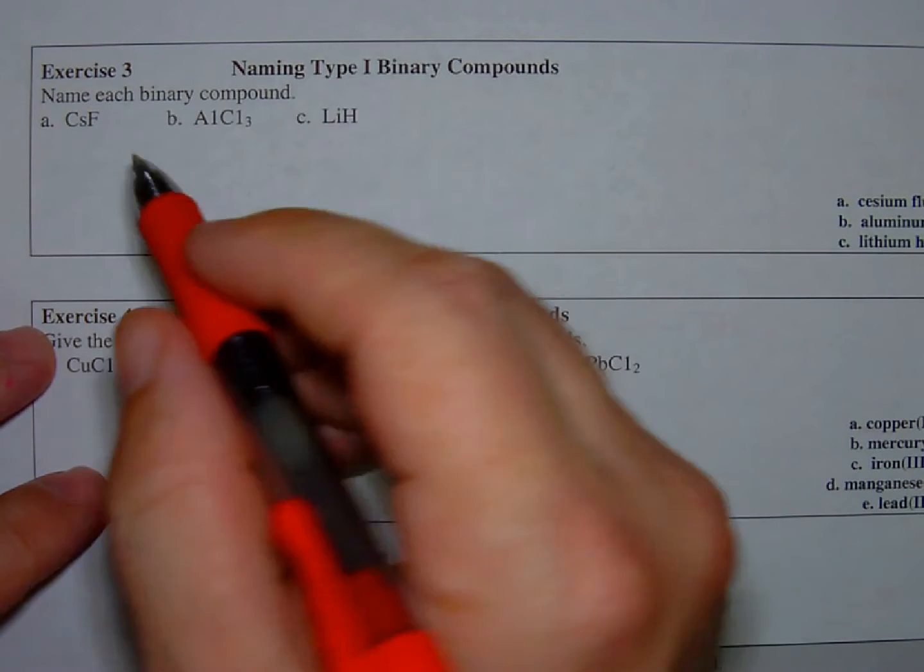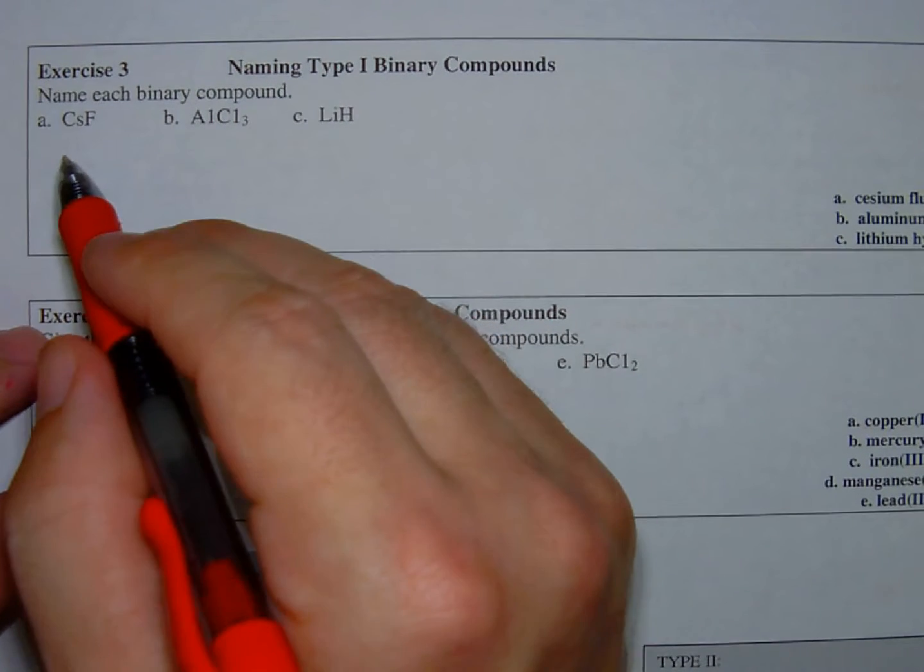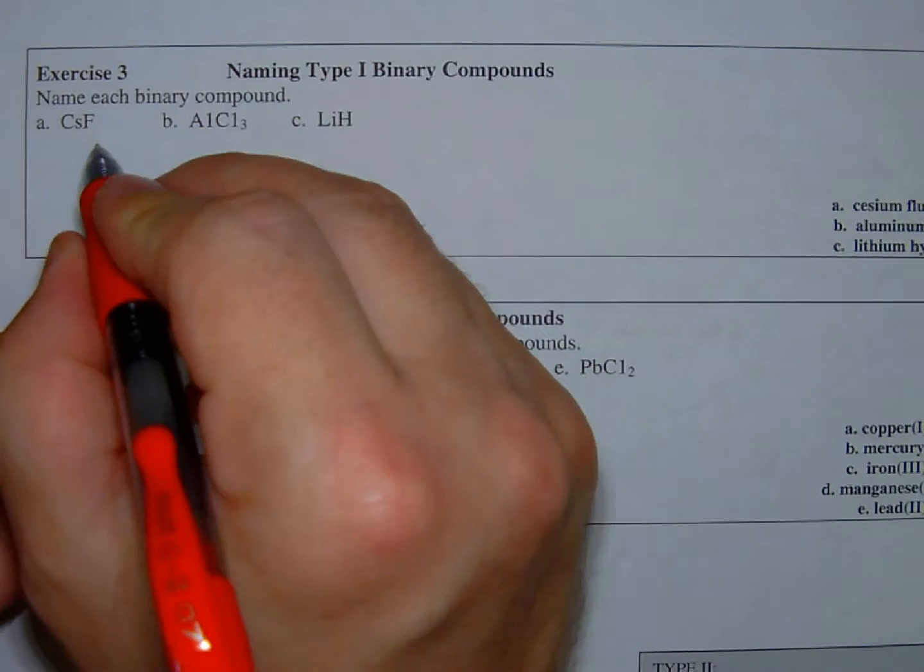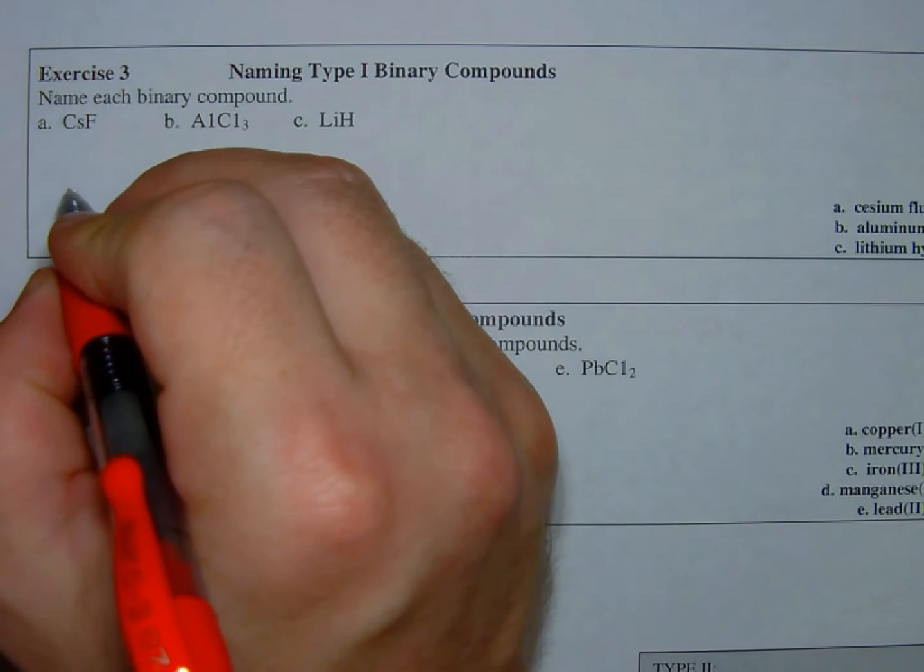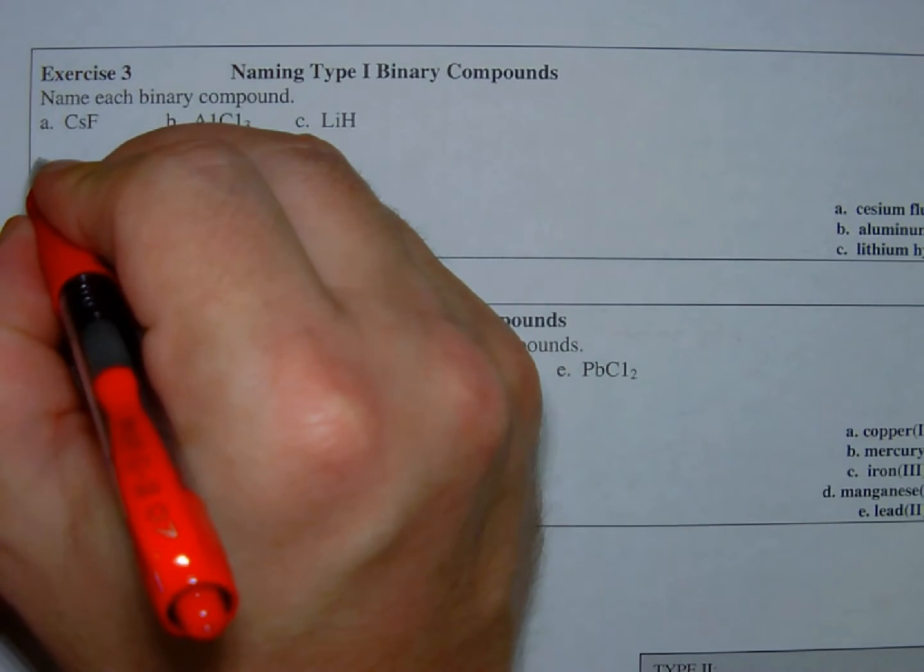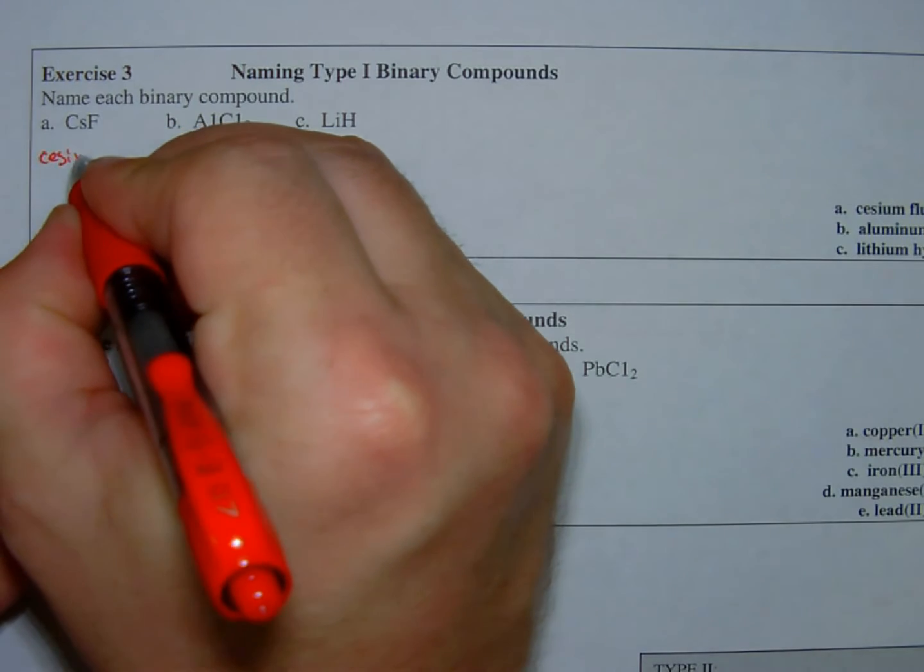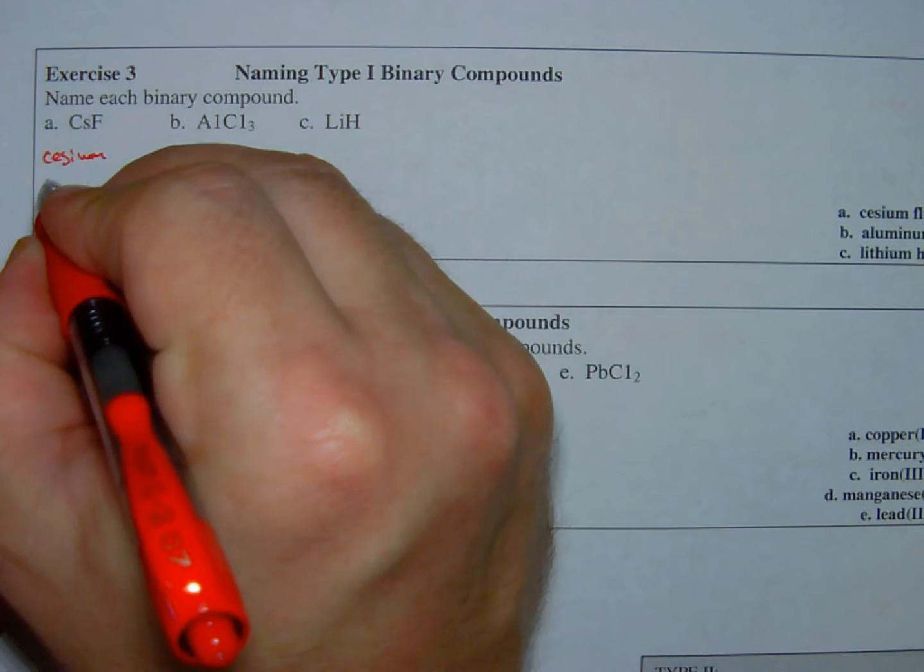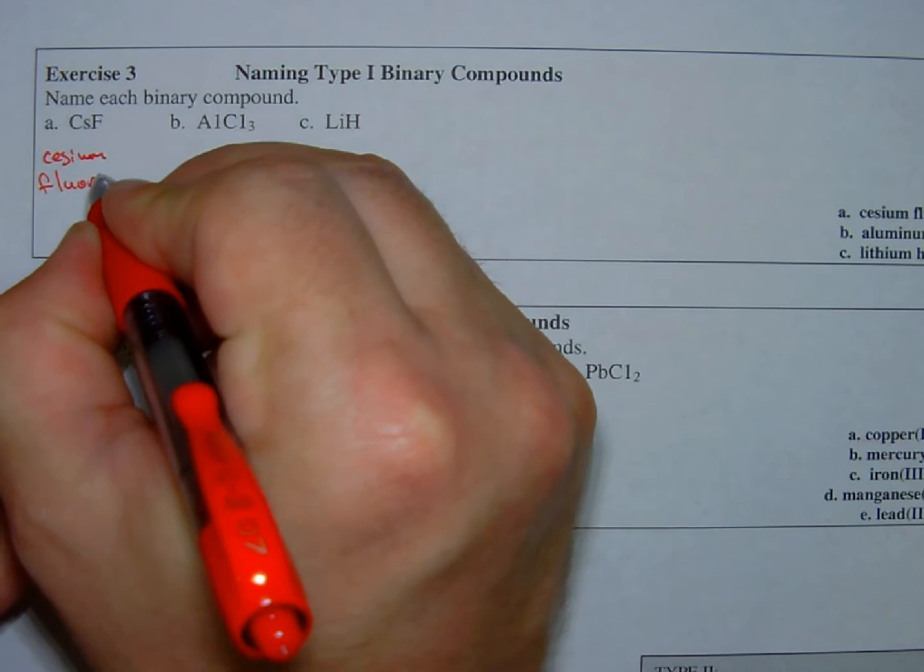This should be a refresher from GenChem. So A is cesium and fluorine, but that fluorine is an anion now, so I'm going to say cesium fluoride.